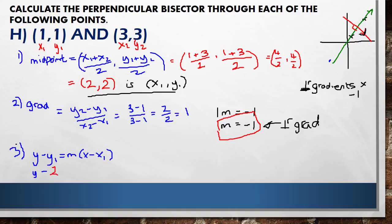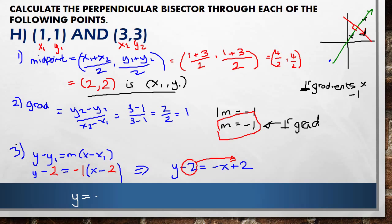Substituting into y minus y1 equals M times (x minus x1): y minus 2 equals minus 1 times (x minus 2). Multiplying out gives y minus 2 equals minus x plus 2. Bringing minus 2 across — it changes sign to plus 2 — gives y equals minus x plus 4. That is the equation of the perpendicular bisector, the line that cuts the previous one in half at 90 degrees.